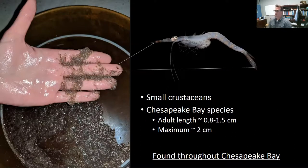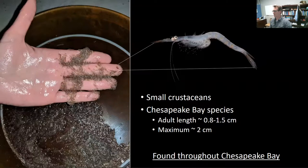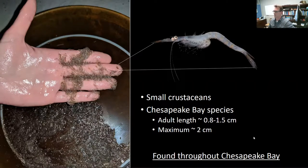These are very small crustaceans. In Chesapeake Bay, we've got a number of species, and you can see an image of mysids we collected in one of our net tows — all those little shiny things are individual mysids. You sort of end up with mysid soup in the sieve after you pull a lot of your nets. Adult length for many of the mysids in the bay is anywhere from 0.8 to 1.5 centimeters; maximum size is around two centimeters. They're not very big, but they are ubiquitous throughout the bay, all the way up from the oligohaline areas near the head of the tide down to the mouth of the bay.